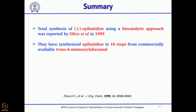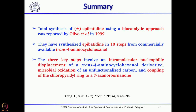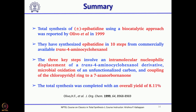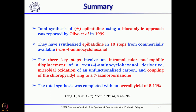If you look at this synthesis, it was done in 10 steps starting from commercially available trans-4-amino-cyclohexanol. The overall yield of this total synthesis is about 8 percent. Still, 8 percent is quite good considering the starting materials are commercially available and not expensive.